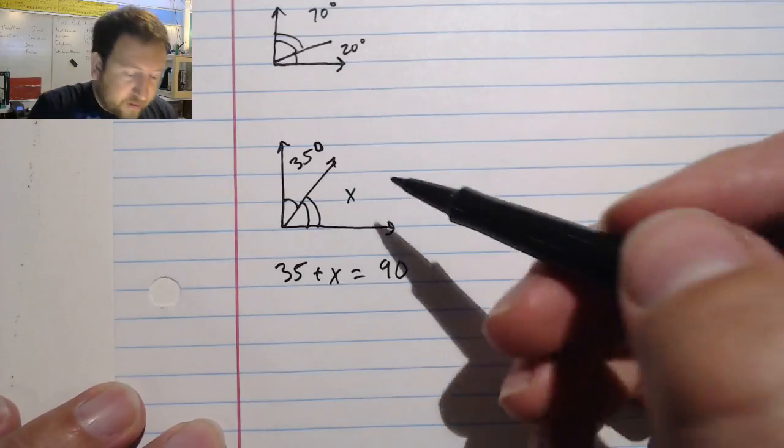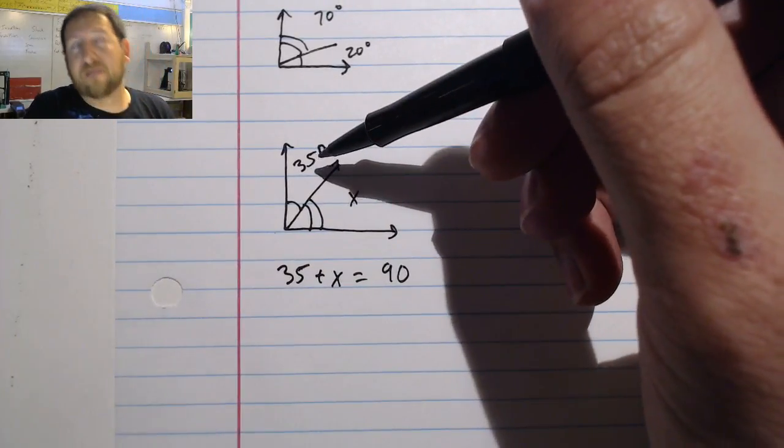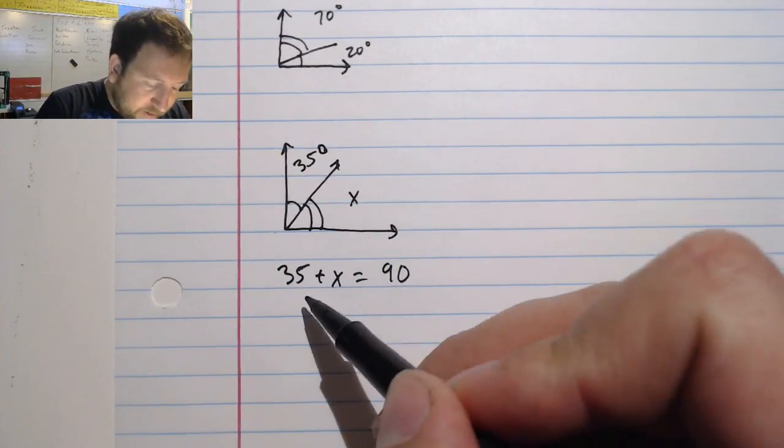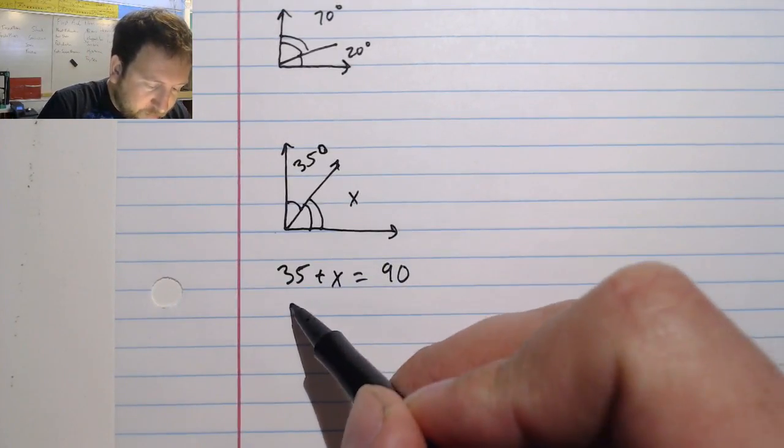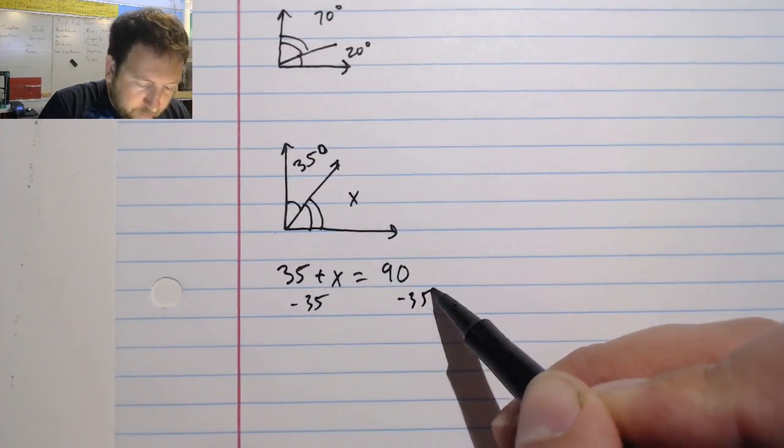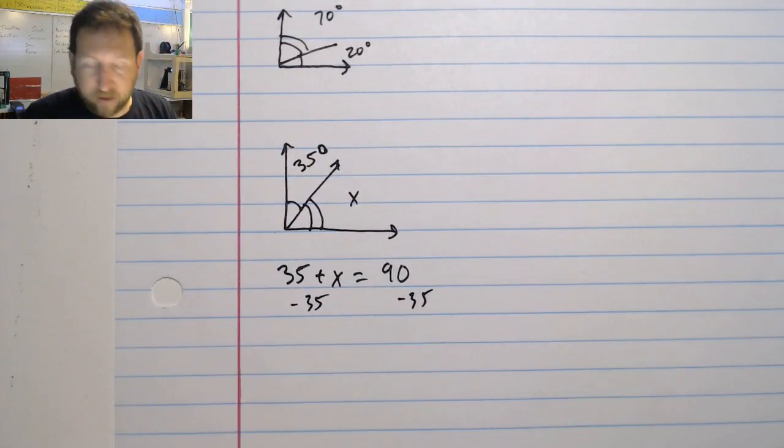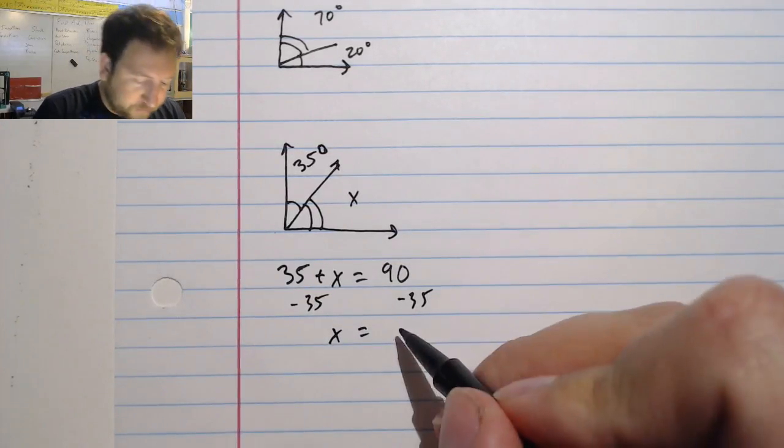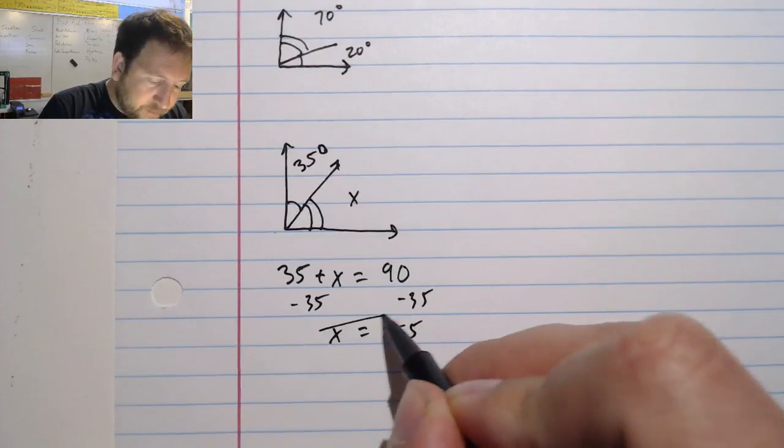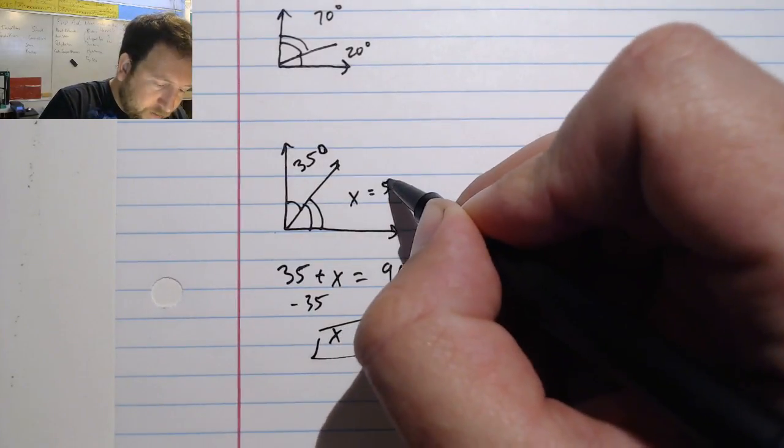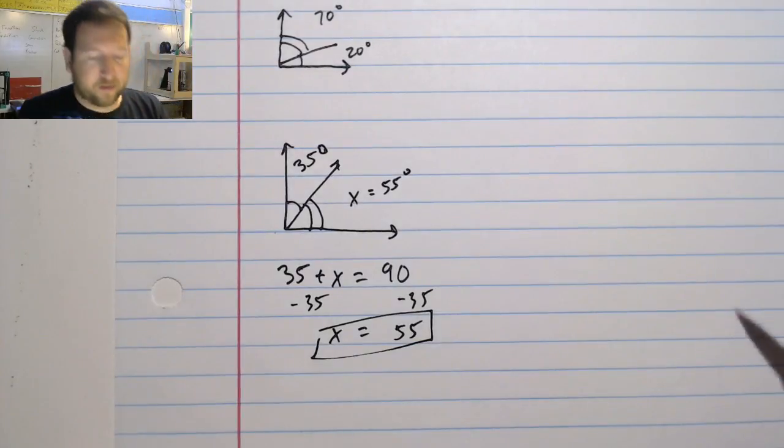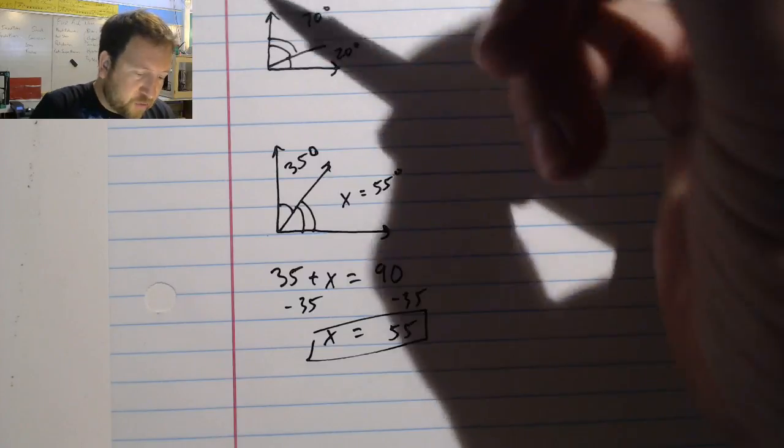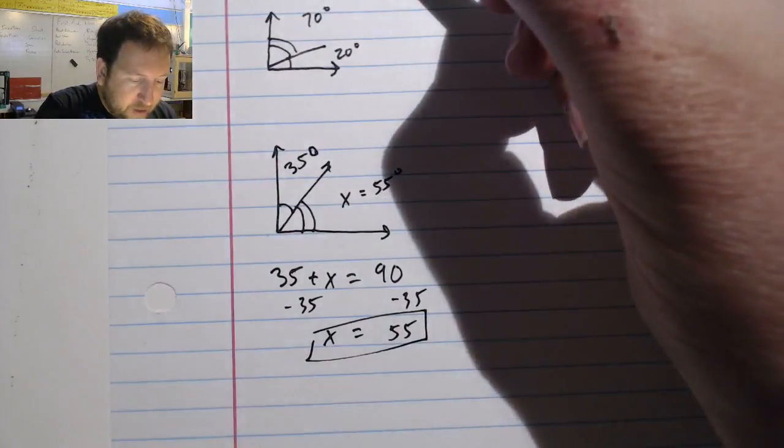So to get what this other missing angle is, I could ask, well, 35 plus what is 90? Or I can simply write it out like this and then subtract. I can see that to solve this, I'm going to need to subtract 35 from both sides because when I do to one side, I have to do to the other. And I have x equals 90 minus 35 is 55. And I can see that my missing angle here is 55 degrees. And I have found this out by using this complementary angle theorem, which is what is the key to this whole thing.